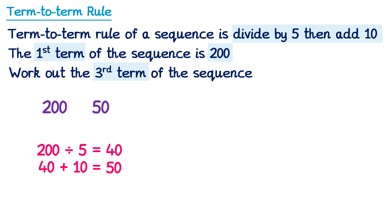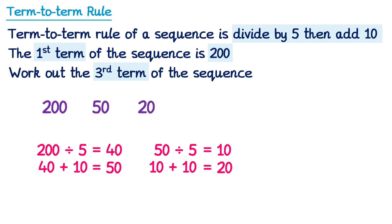Then we take this term and we apply the term-to-term rule once more. So 50 divided by 5 is 10. And then it says to add 10, so we add 10 to 10. So 10 add 10 is 20. So we get 20 for the third term, which means the answer must be 20.